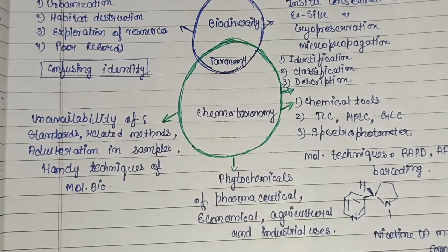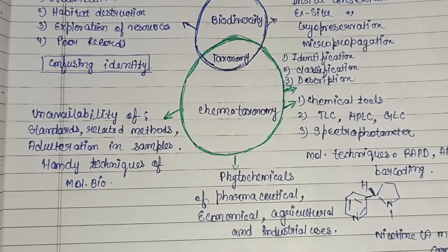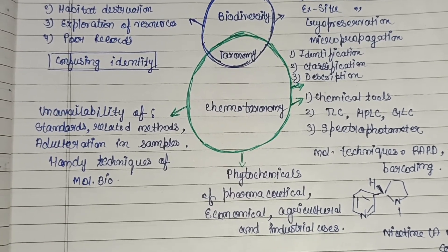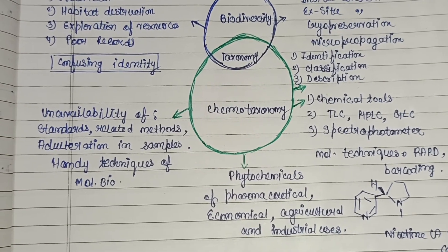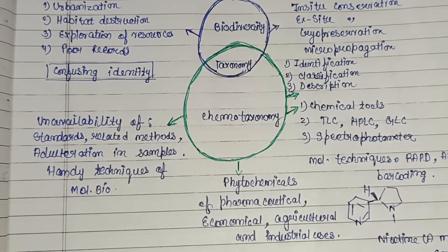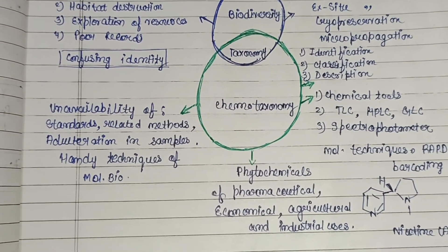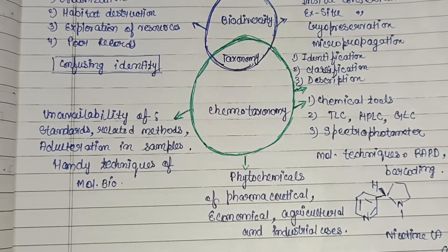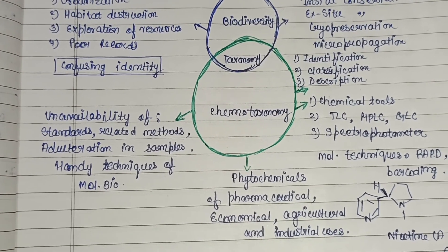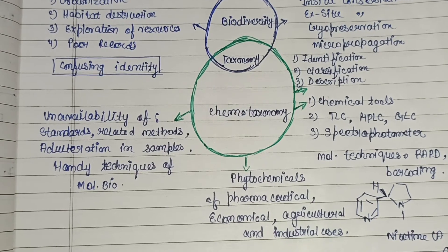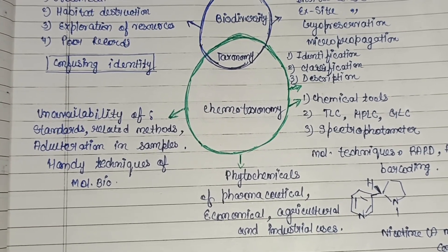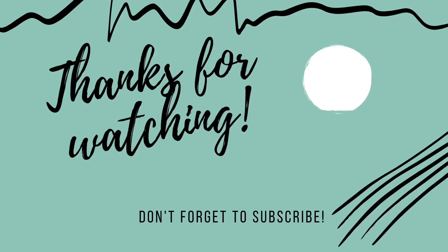Finally, the difference between chemotaxonomy and cytotaxonomy: cytotaxonomy is based on cytological information of a cell, like chromosome number, whereas chemotaxonomy is based on the chemical constituents of organisms, such as DNA sequences. This is all about chemotaxonomy, its importance, significance, and approach. If you like my video, please like, share, and subscribe to my channel.